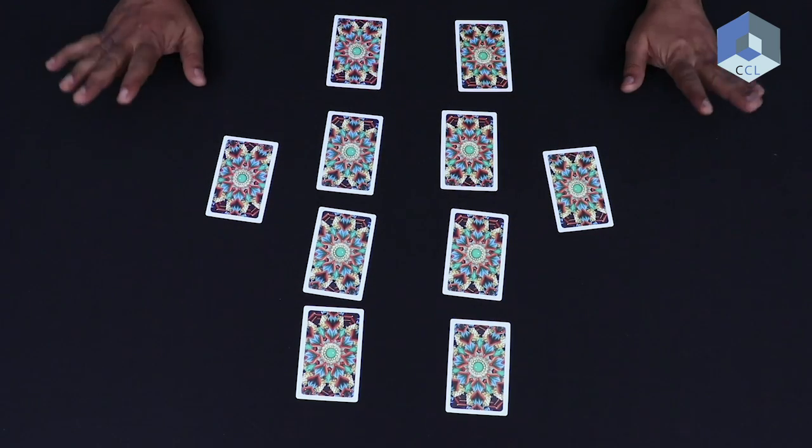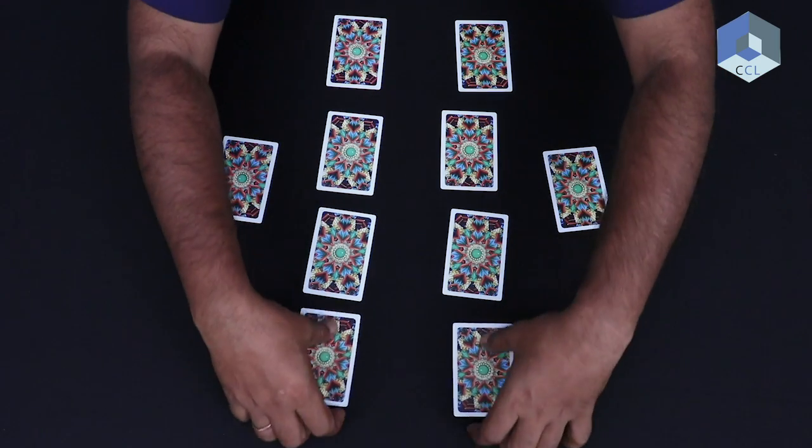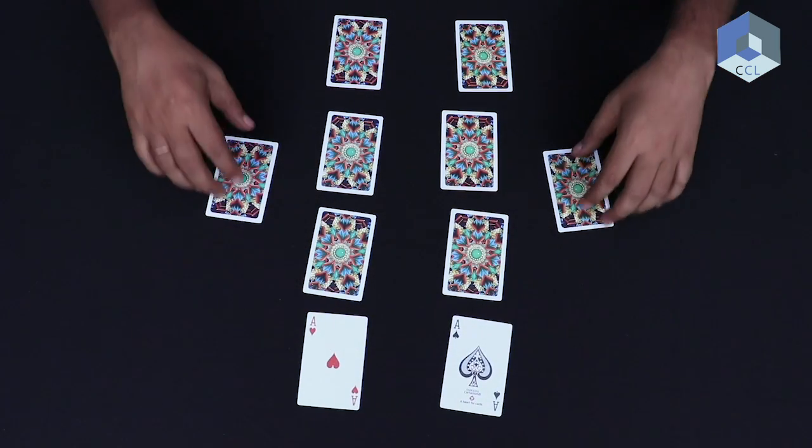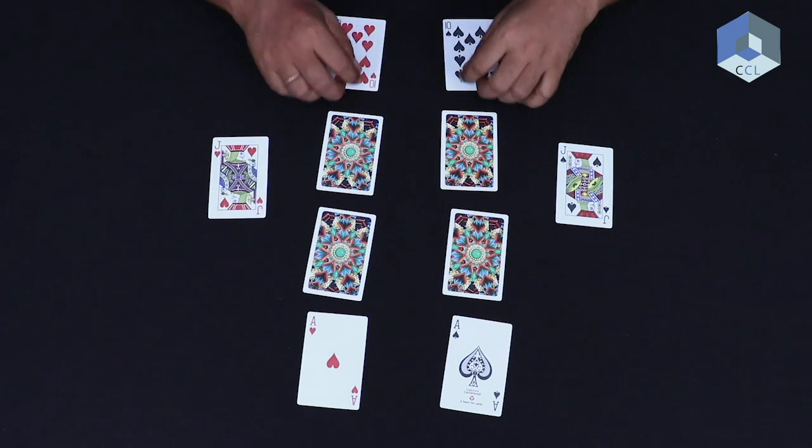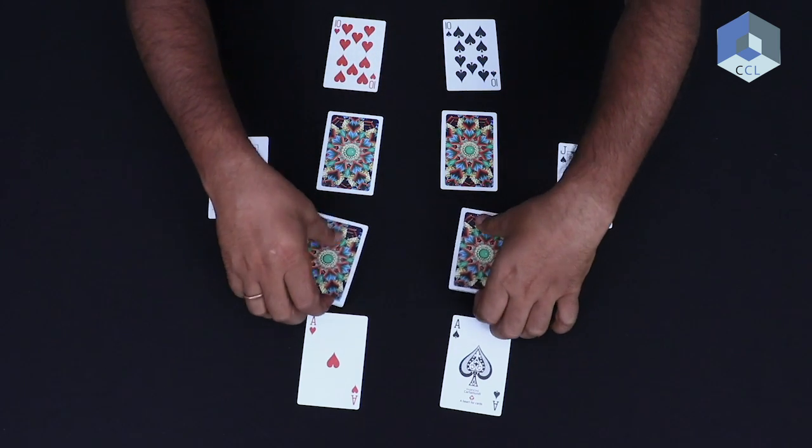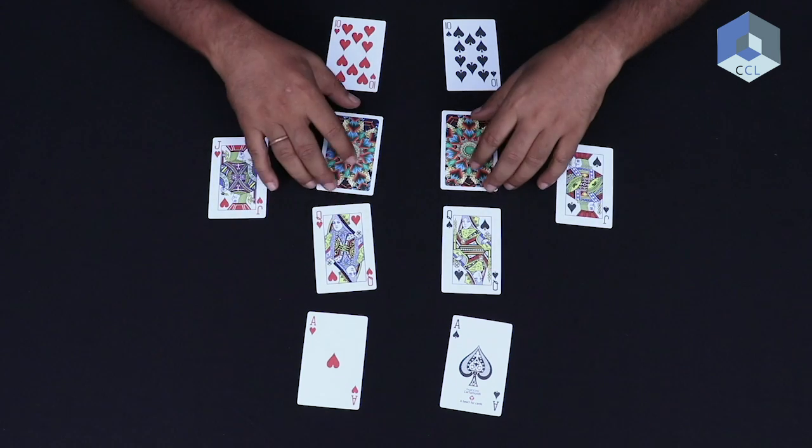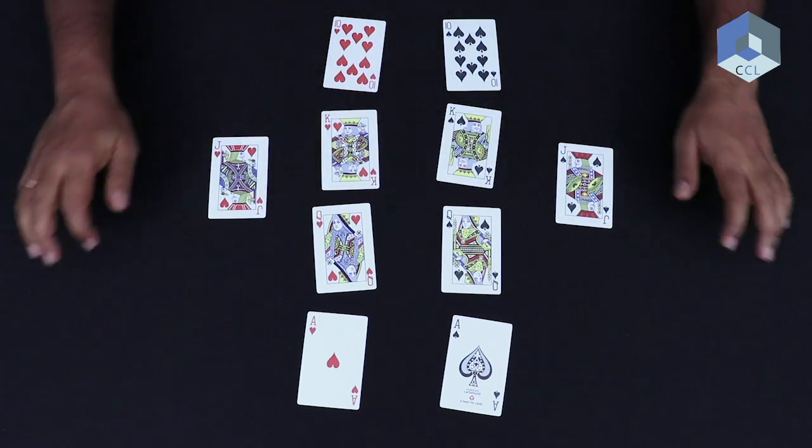And magically I will just blow and say Mera Bharat Mahan. These are two aces, two jacks, two tens, two queens, and this has to be two kings.